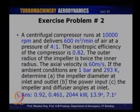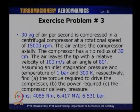Exercise problem 3: 30 kg/s of air is compressed in a centrifugal compressor at 15,000 rpm. Air enters axially with a tip radius of 30 cm. Air leaves the tip with a relative velocity of 100 m/s at an angle of 80 degrees. Inlet stagnation conditions: 1 bar and 300 K. Find torque (4085 N·m), power required (6.417 MW), and compressor delivery pressure (6.531 bar).